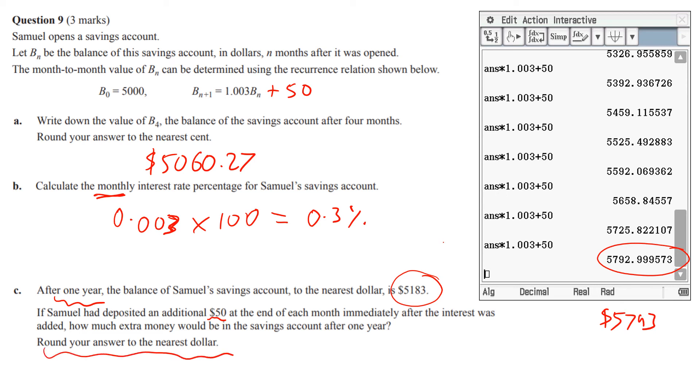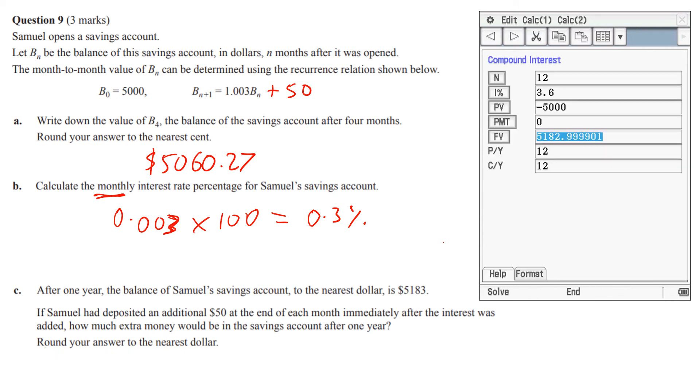So we want to know also in this question how much extra money will be in the savings account after one year. So it's the difference between those two numbers. Let me just show you another way to calculate this - you could use the financial solver. So you can see the original recurrence relationship without the plus 50. You can put it in here: 12, 3.6 annual percentage rate - 3.6, and you have to take that 0.3 times by 12 - minus 5000 because you put the money in the bank, no payments, you get the $5183. So that's a good way just to check that your technique is working, so you haven't accidentally put the wrong interest percentage rate in there. It's just a good thing to double check, it doesn't take long.